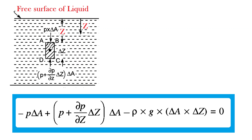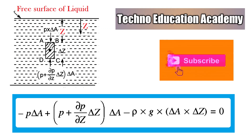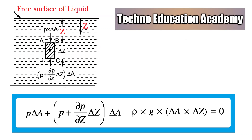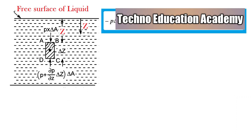For the equilibrium condition, sigma vertical equals zero. The first pressure force on face AB, minus P into delta A, acts downward (negative sign). Plus P plus (del P / del z) into delta Z, multiplied by delta A, acts upward (positive sign). Minus rho into G into delta A into delta Z represents the weight of the fluid element acting downward (negative sign). Weight equals rho times V times g, where V equals delta A into delta Z. This all equals zero.